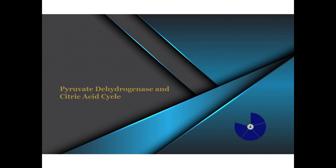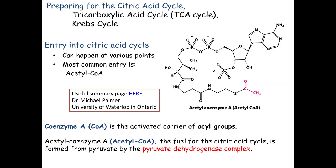The first complex we'll talk about is the pyruvate dehydrogenase complex, which links glycolysis and the citric acid cycle. To prepare, we need to look at acetyl-CoA — specifically the CoA part. It has an adenine ring connected to a ribose, connected to three phosphates, then a pantothenic acid group, and at the very end, the business end of the molecule is a sulfur.